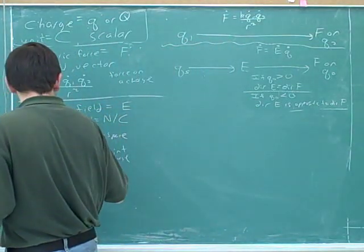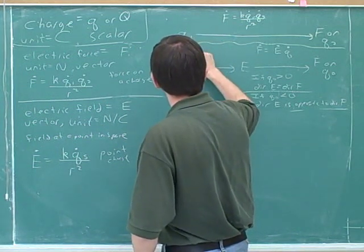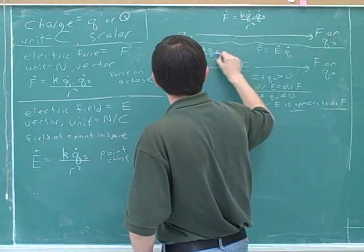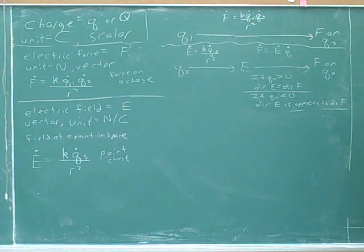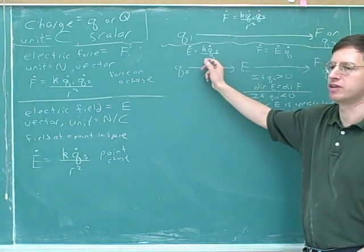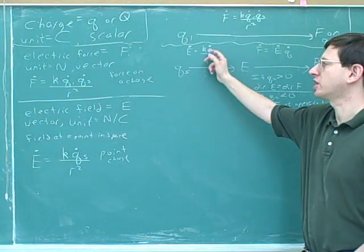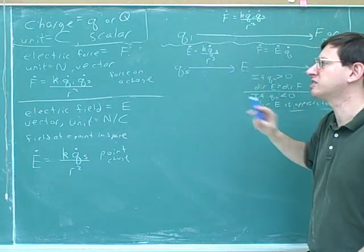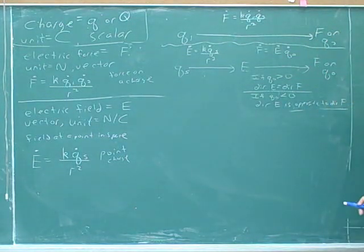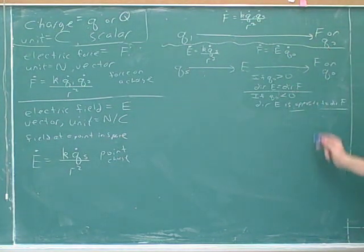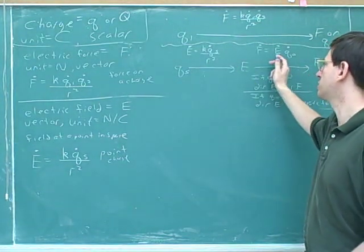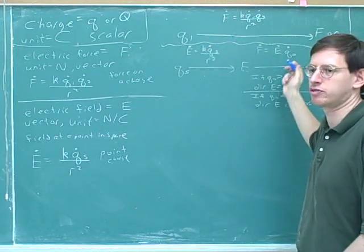We're only going to use this formula for magnitudes. So we have k times the source charge over r squared. Notice that it makes sense that we're putting in the source charge and not the test charge, because it's the source charge that's creating the electric field. One of the biggest mistakes people make is confusing the source charge and the test charge. You should definitely go back and be careful to label which is the test charge. You have to ask: am I focusing on the source charge or the test charge? That tells you which formula is appropriate.